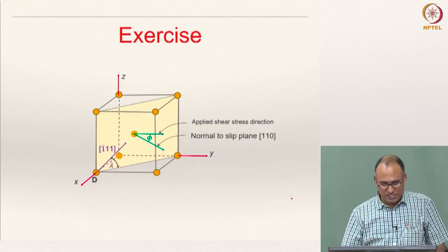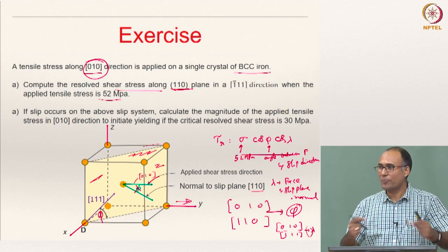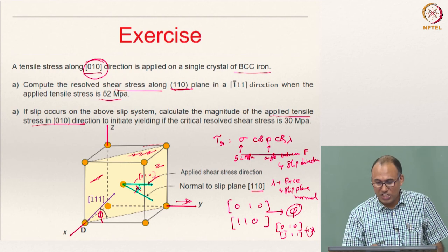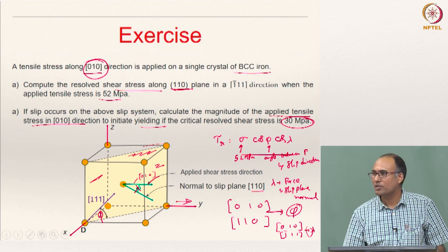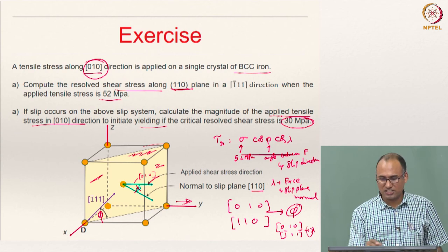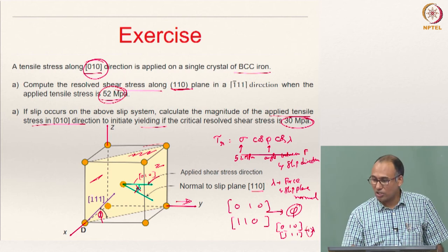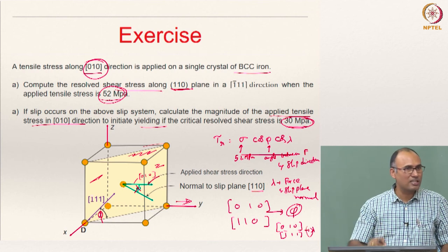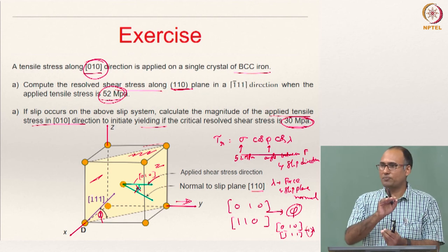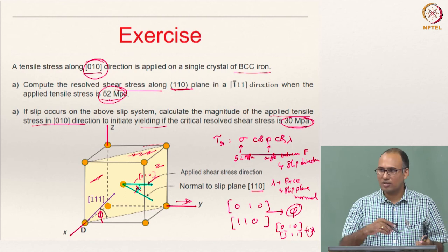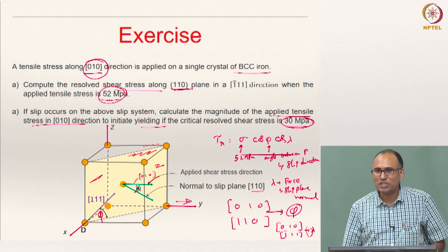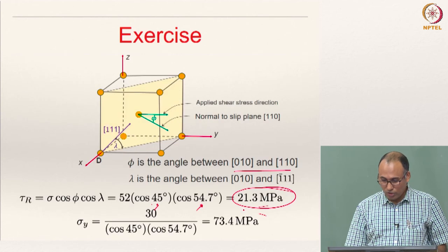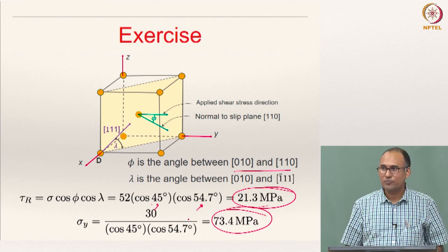The second part of the problem: if the critical resolved shear stress is 30 MPa, calculate the magnitude of applied tensile stress required to initiate yielding on this slip system. Since the resolved shear stress of 21.3 MPa is less than the CRSS of 30 MPa, yielding has not occurred at 52 MPa. To find the required stress, you know tau_r = 30 MPa and solve for sigma: sigma = tau_r / (cos phi × cos lambda) = 73.4 MPa.